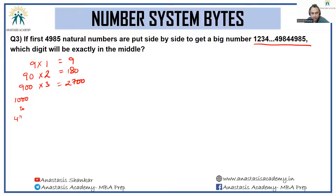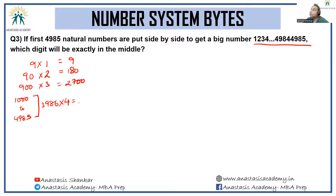From 1000 to 4985, there are 3986 four-digit numbers, each using 4 digits: 3986 × 4 = (4000 × 4) − (14 × 4) = 16000 − 56 = 15944 digits.